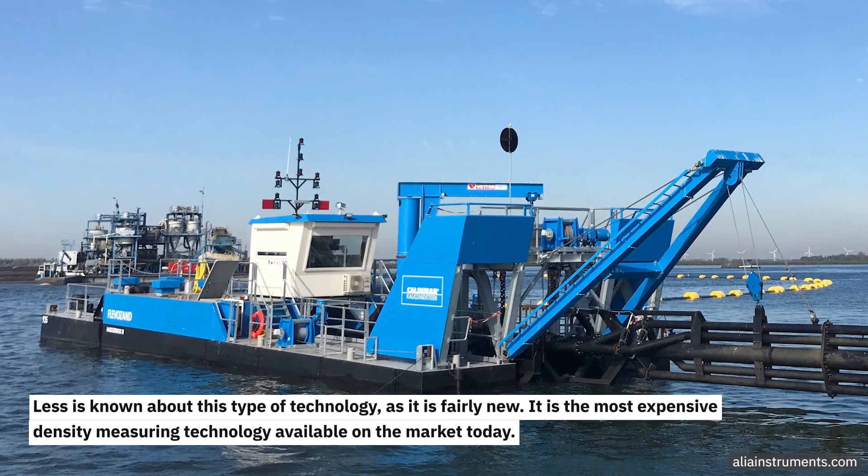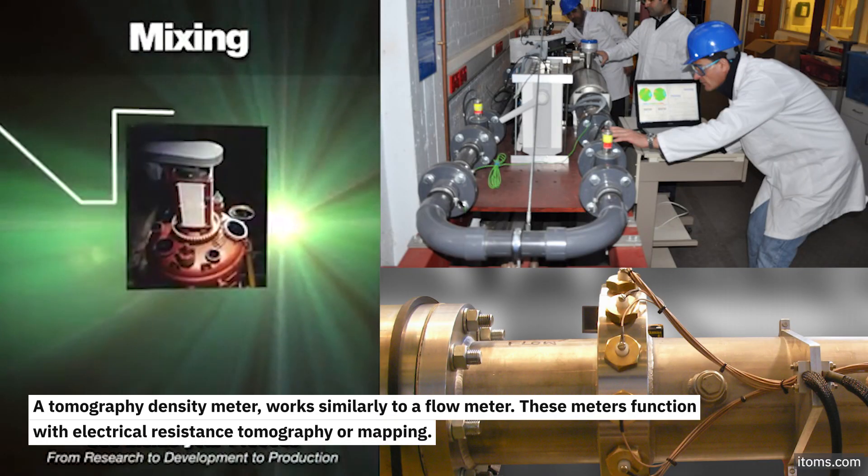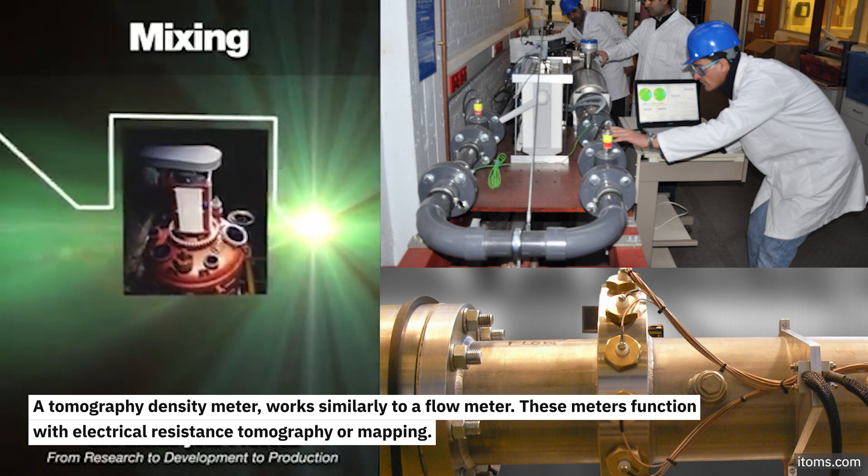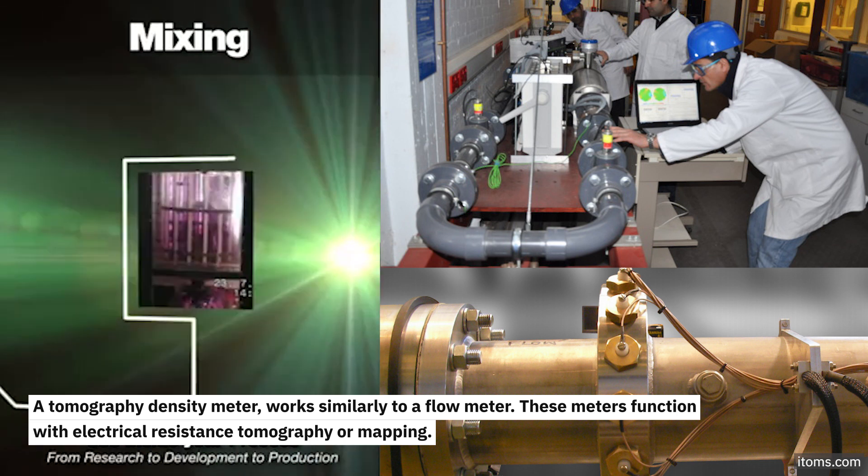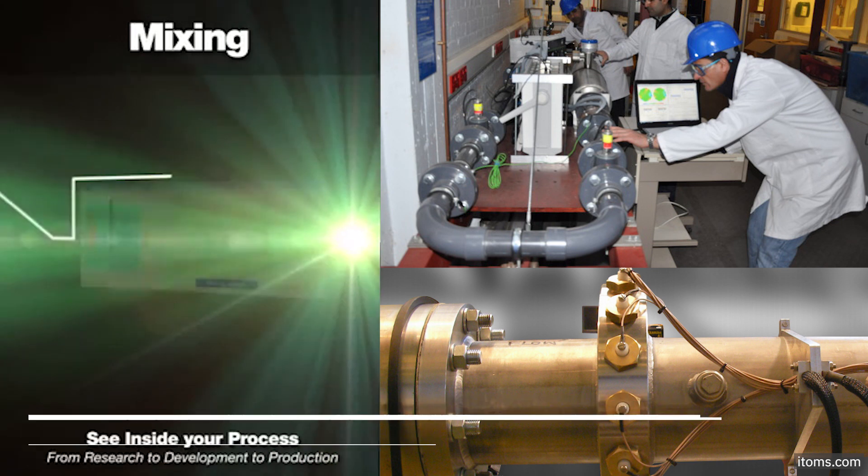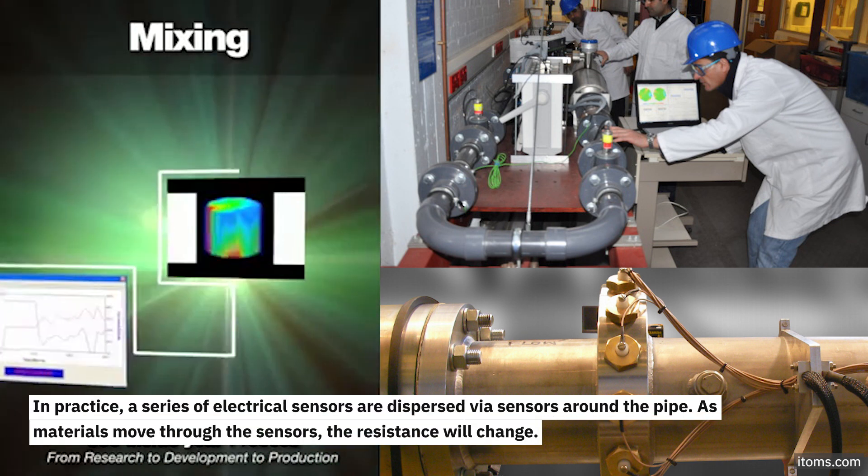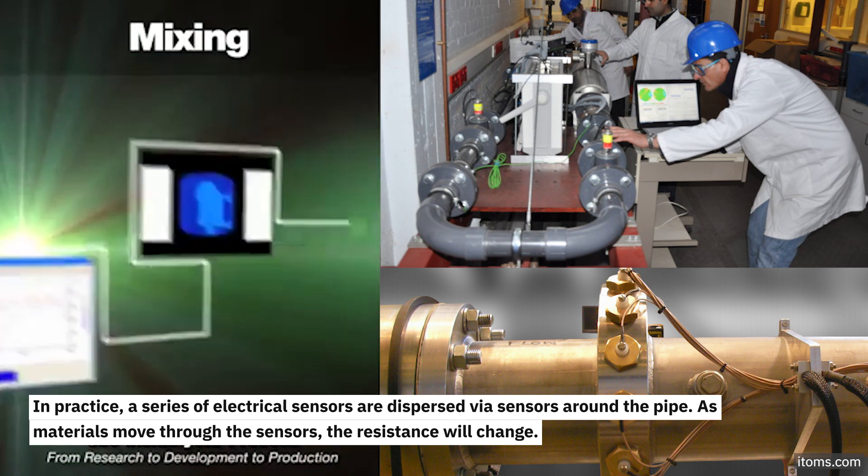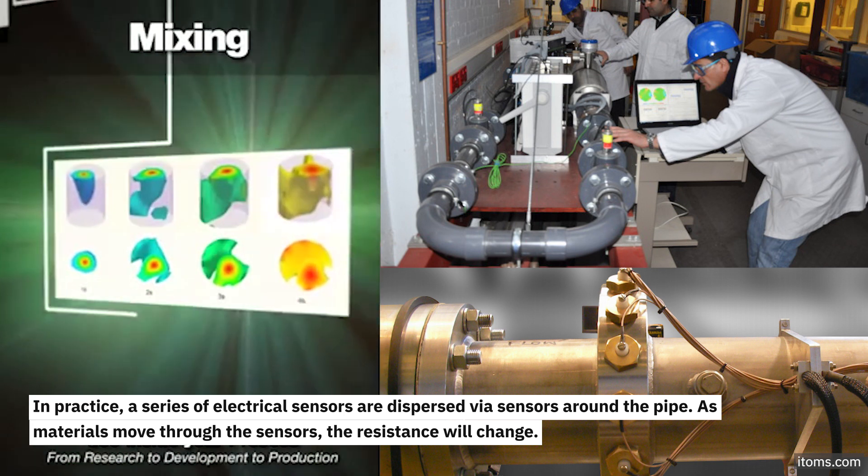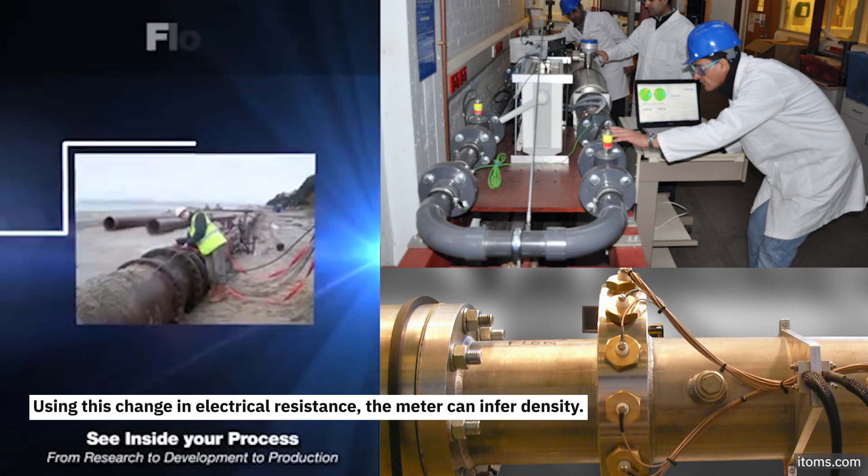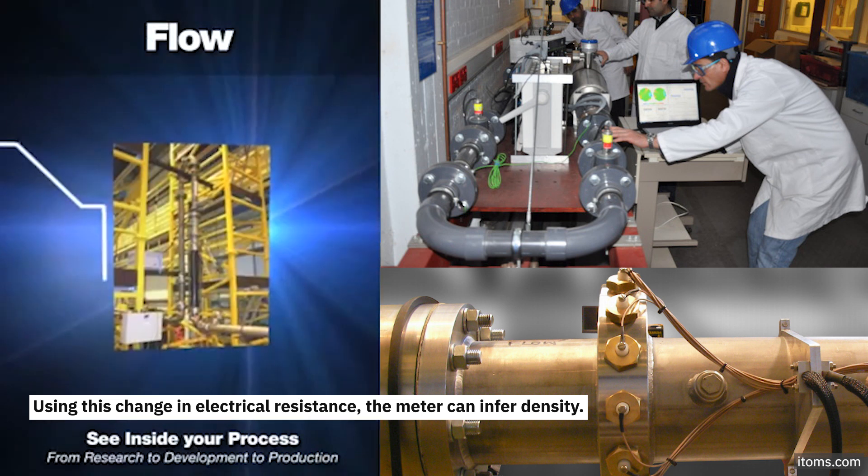A tomography density meter works similarly to a flow meter. These meters function with electrical resistance tomography, or mapping. In practice, a series of electrical sensors are dispersed around the pipe. As materials move through the sensors, the resistance will change. Using this change in electrical resistance, the meter can infer density.